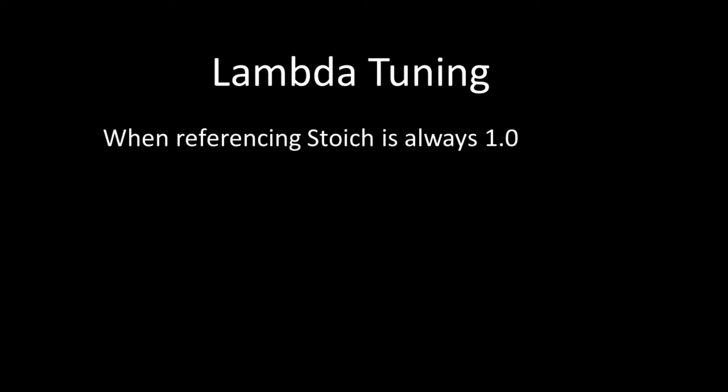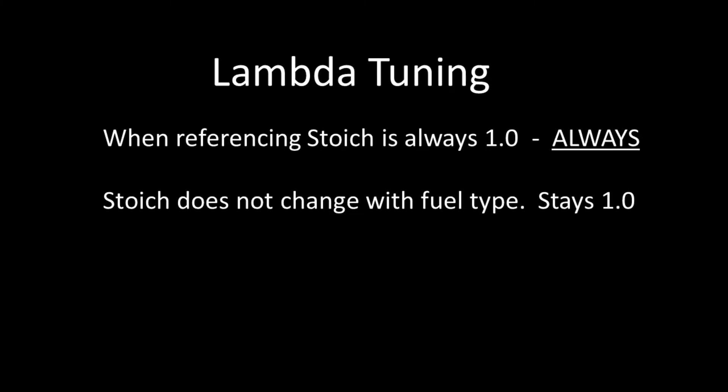Let's talk about Lambda and how it's different. Lambda, when referencing stoichiometric ratio, is always 1.0. Always — that is always stoic, never changes. It's always 1.0 no matter what type of fuel you're using. E10, diesel, pure alcohol, whatever — it is always 1.0.